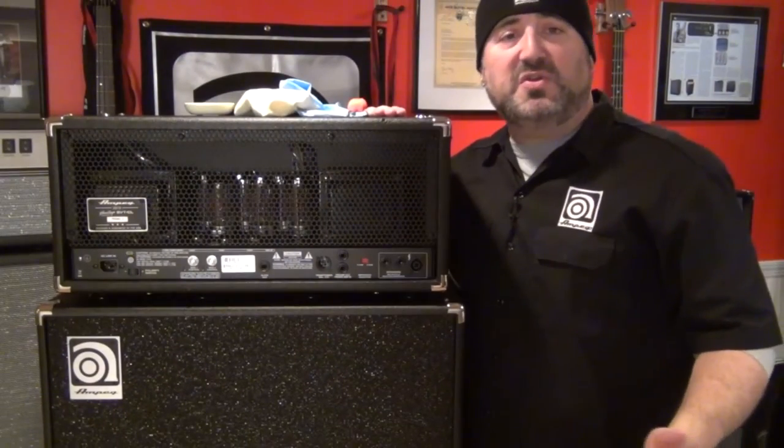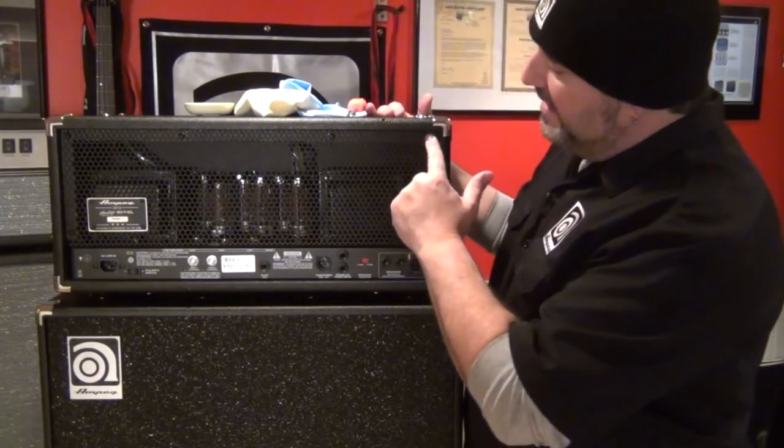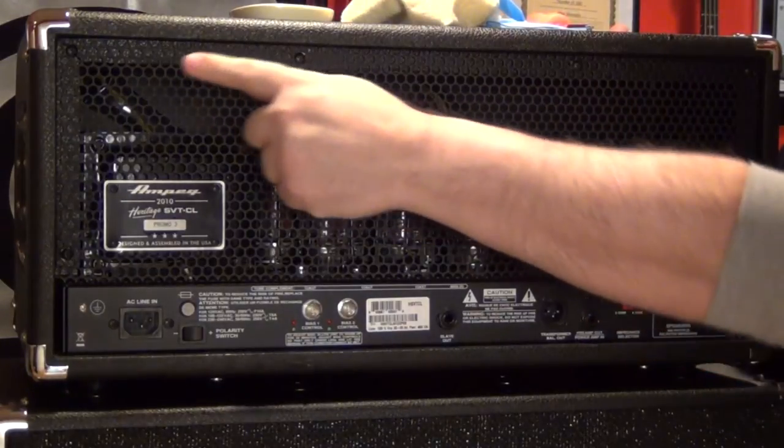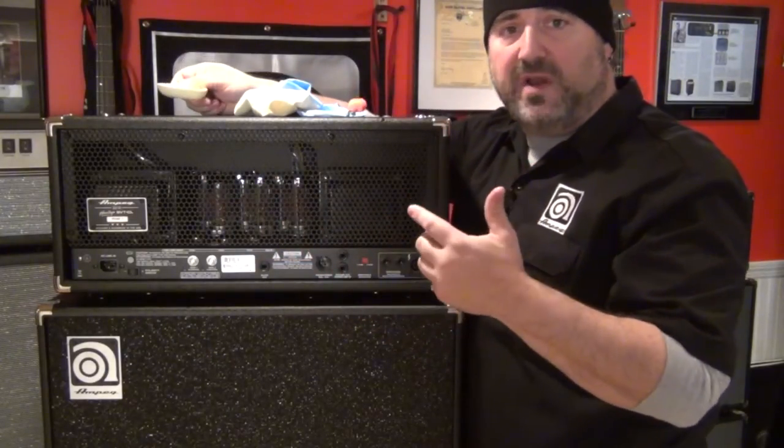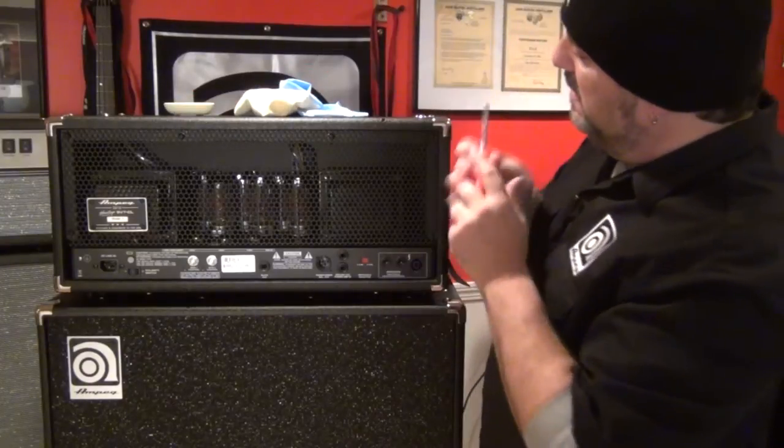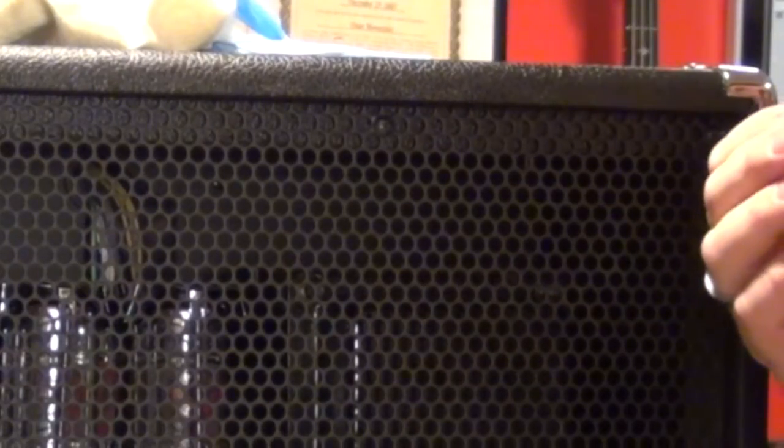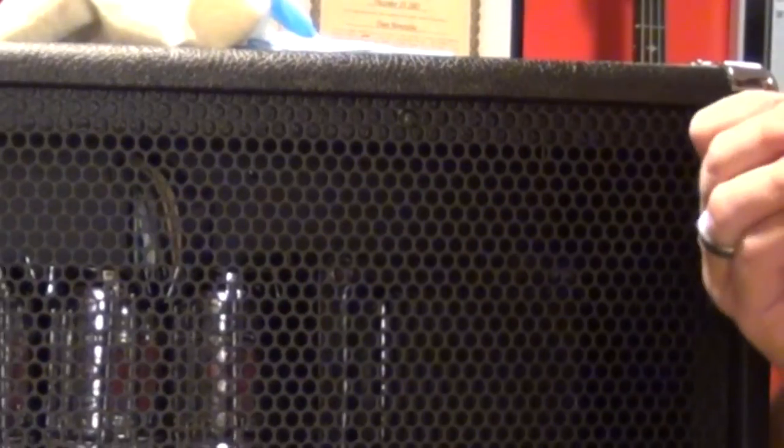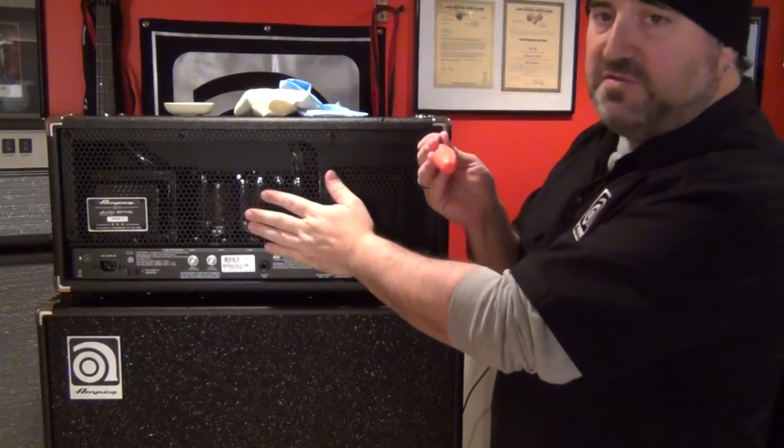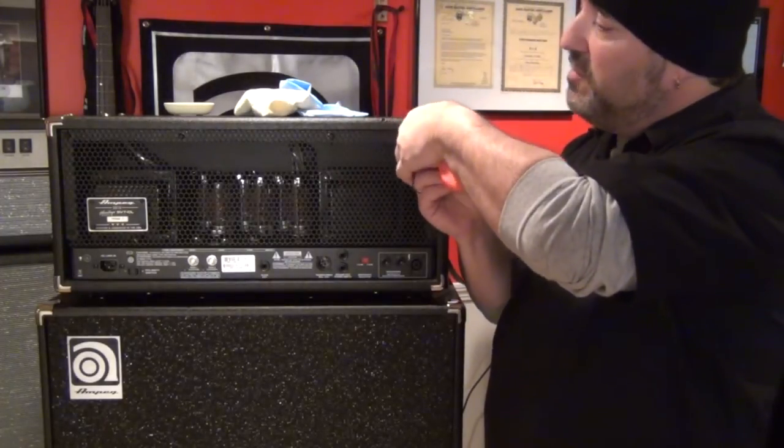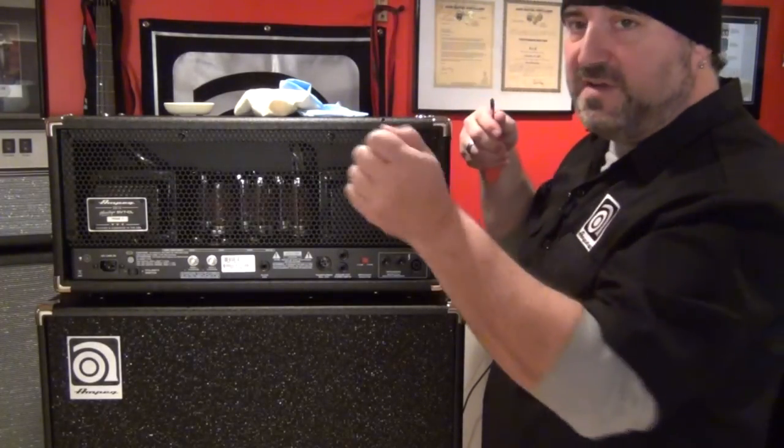First thing we want to do is to remove all the screws that fasten the perforated cover to the back of the amp. This is where the small dish comes in handy to put the screws so they don't go running off. So I'll start here, remove this screw. Once the screws are all removed, this cover should just pop right off. So I'll remove all these screws, get the cover popped off, and come right back.